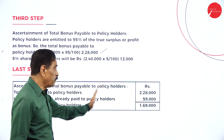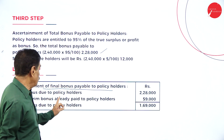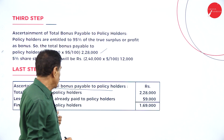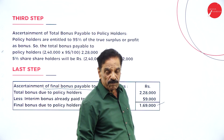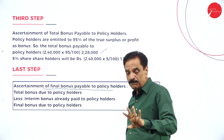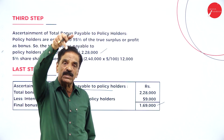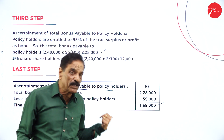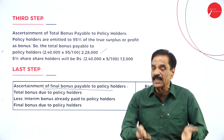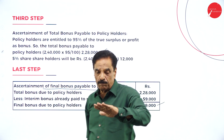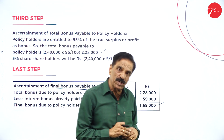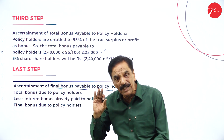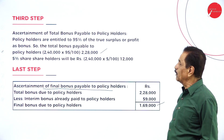Final bonus to policyholder — the last step: total bonus to policyholder is Rs. 2,28,000, which is the 95%. Less interim bonus already paid of Rs. 59,000; the final bonus payable is Rs. 1,69,000 to the policyholder. So there are four steps: find out the surplus from the life fund minus net liability; add interim bonus and deduct profit carried forward and dividend to get the true surplus — in this problem there is no profit carried forward; 95% goes to policyholder, 5% to shareholder; and finally deduct the interim bonus already enjoyed to get the final bonus payable.